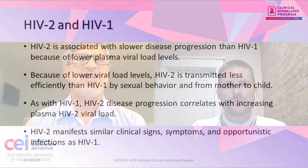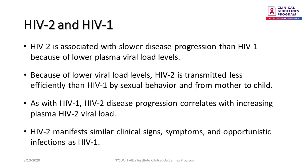Can you briefly describe the primary differences between HIV-1 and HIV-2? Firstly, both HIV-1 and HIV-2 can cause AIDS, but HIV-2 is associated with slower disease progression than HIV-1 because of lower plasma viral loads. And because of lower viral loads, HIV-2 is transmitted less efficiently than HIV-1 by either sexual contact and from mother to child. As with HIV-1, disease progression in HIV-2 infection correlates with increasing plasma HIV-2 viral load levels. And lastly, HIV-2 manifests similar signs, symptoms, and opportunistic infections as seen with HIV-1.